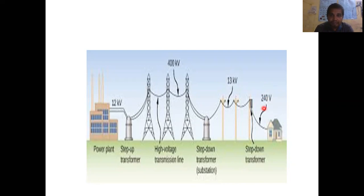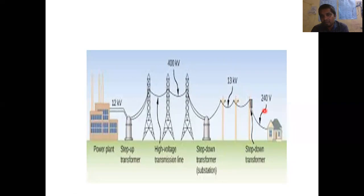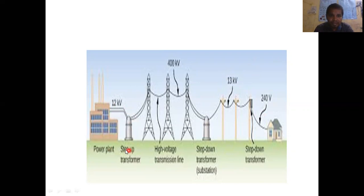In the distribution side, we have two types of consumers. One consumer may have single-phase supply of 240 volts and another consumer may have 440 volts of three-phase supply, depending upon the consumer load. Those having big houses and needing more load may use the three-phase system, while those with very small houses may use single-phase supply of 240 volts. For higher industries, they may have 13 kV. This is a typical power system showing the power plant, step-up transformer, transmission line, step-down transformer, and distribution.